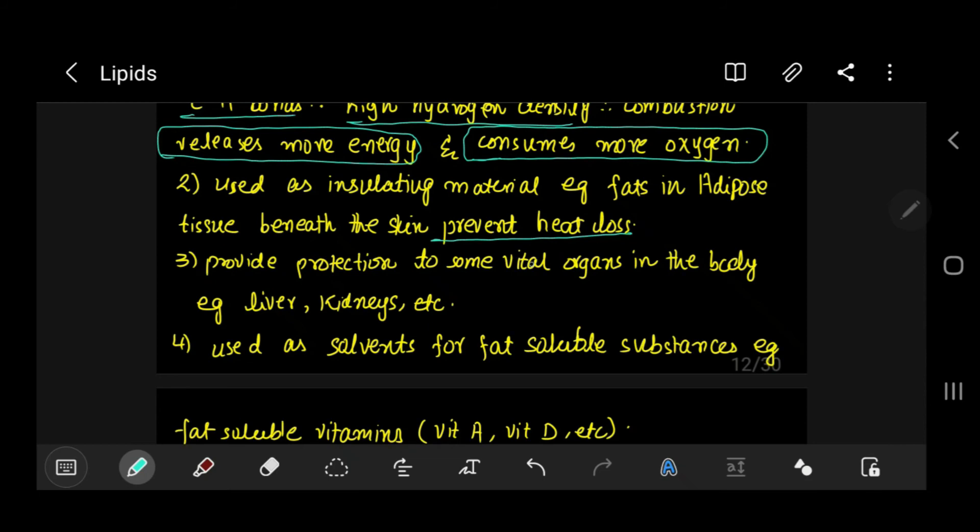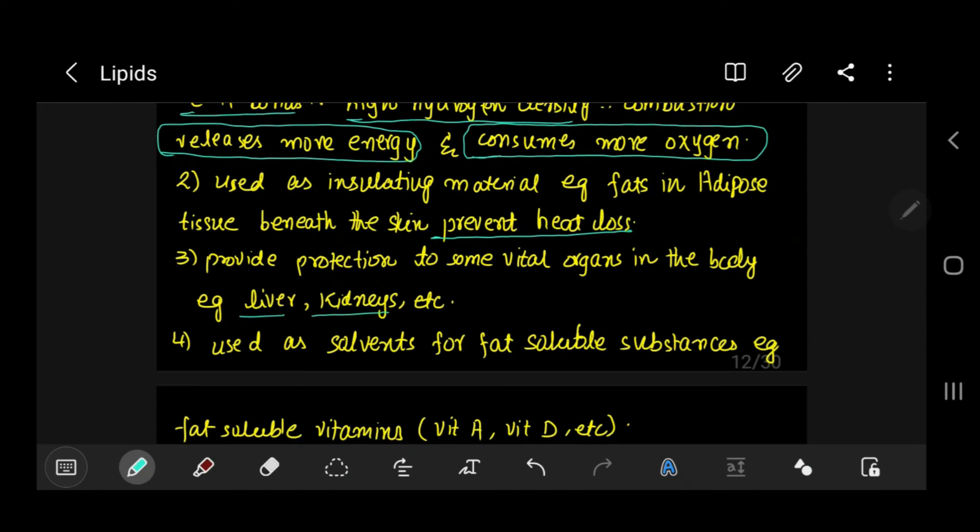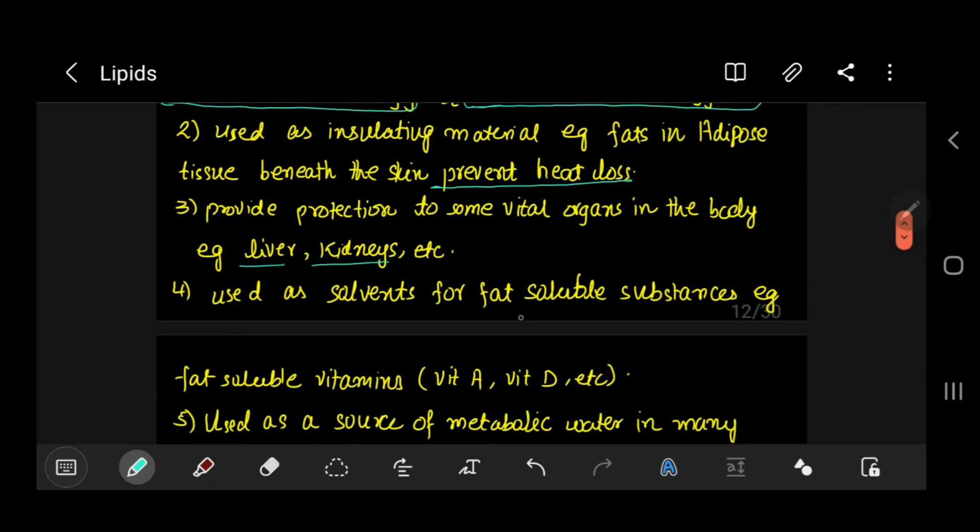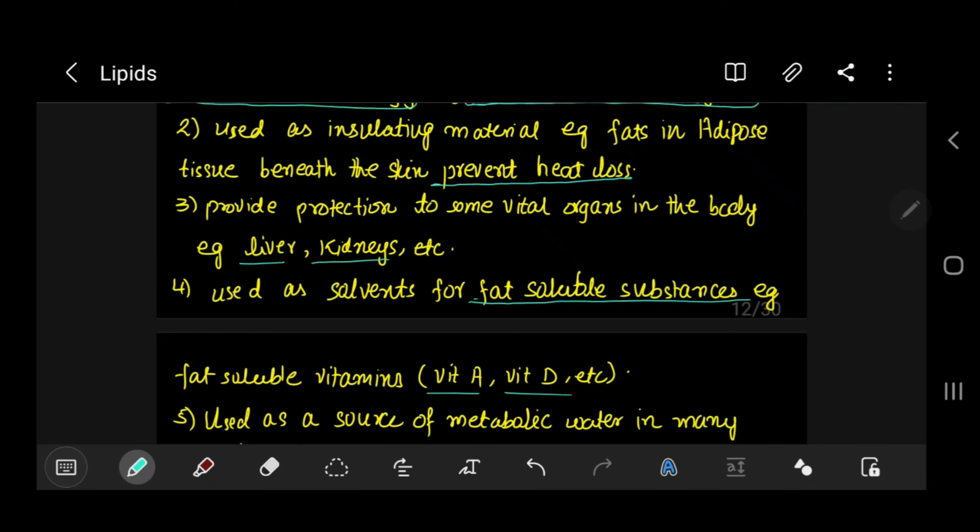The third function for triglycerides is they provide protection to some vital organs in the body, for example liver, kidneys, etc. The fourth function is that they are used as solvents for fat-soluble substances, for example fat-soluble vitamins like vitamin A and vitamin D.